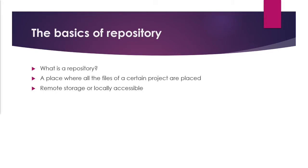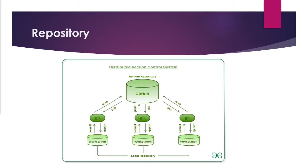We have two types of repositories: local and remote. That's because we have two options to work with Git — the first one being starting a new project, and the second one is joining an already existing project. That was the introduction to repositories, and here we can see a diagram that showcases how a distributed version control system actually works.